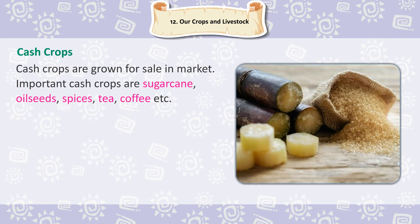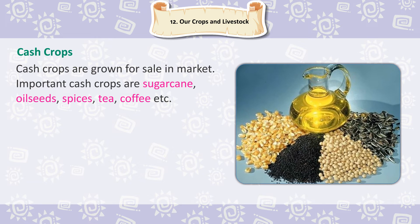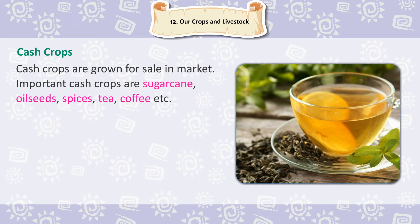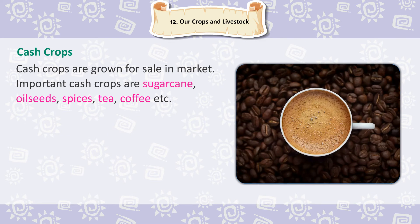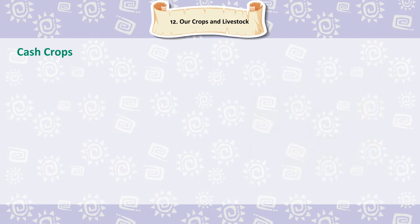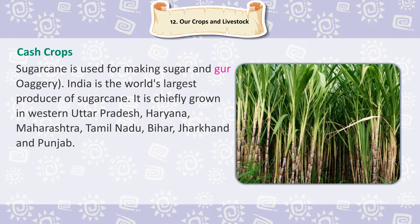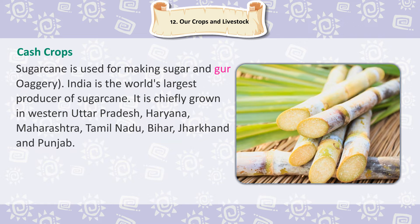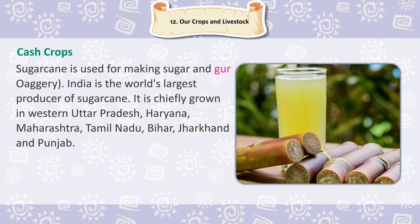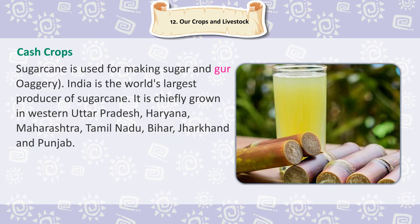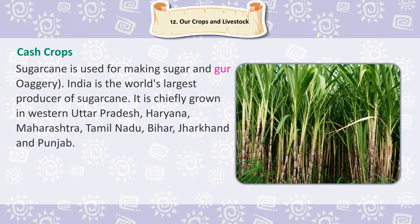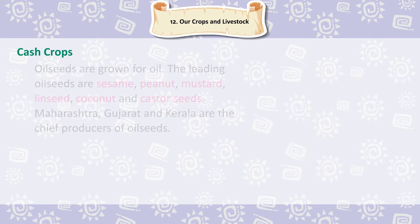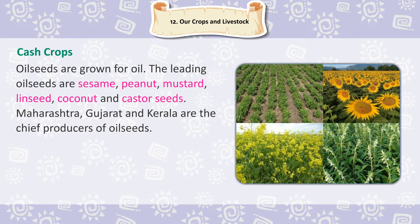Cash Crops. Cash crops are grown for sale in the market. Important cash crops are sugarcane, oilseeds, spices, tea, coffee, etc. Sugarcane is used for making sugar and gur or jaggery. India is the world's largest producer of sugarcane. It is chiefly grown in Western Uttar Pradesh, Haryana, Maharashtra, Tamil Nadu, Bihar, Jharkhand and Punjab.